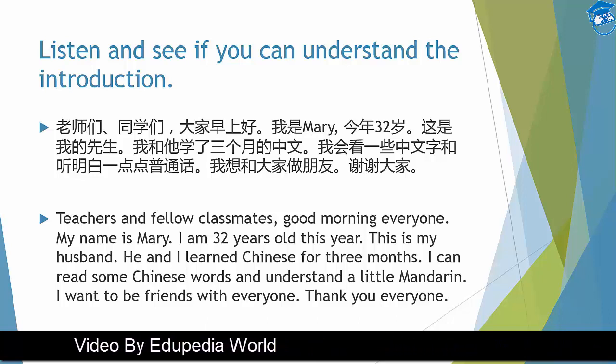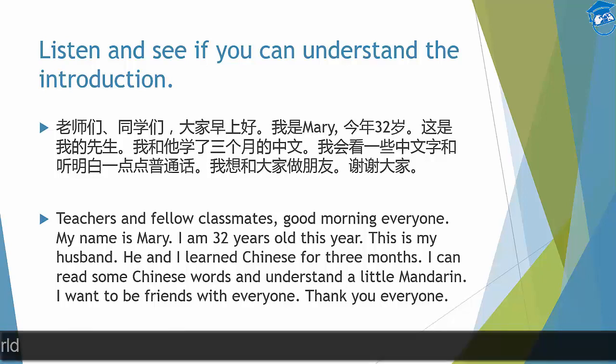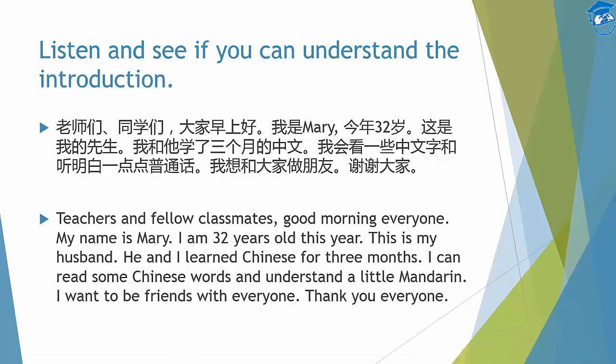我是Mary — my name is Mary. I am 32 years old this year. You notice that the 我 is omitted before 今年三十二岁 because it is understood that you are talking about yourself, so you don't have to add 我 there. This is my husband — 这是我的先生. 我和他学了三个月的中文 — he and I learned Chinese for three months.